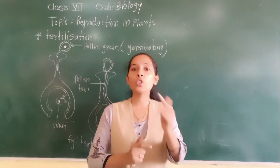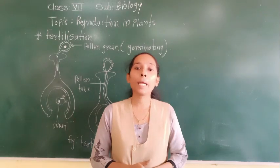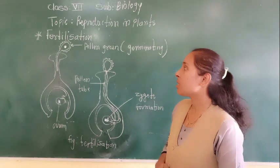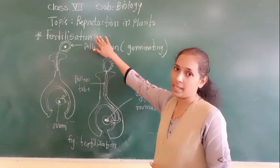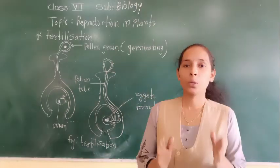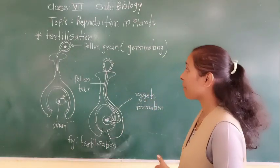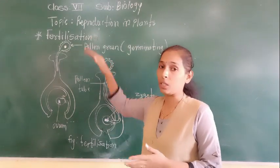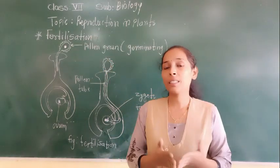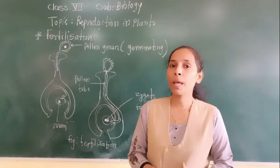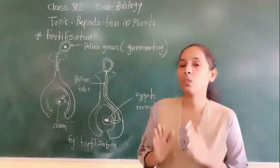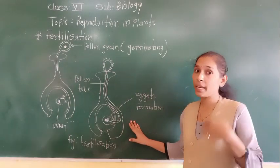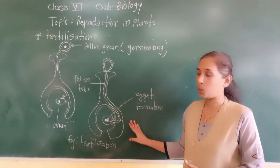So the fusion of the male and the female gamete — that process is called fertilization. Now let's discuss how exactly the pollen grains from the anther reach the ovary and get mixed with the ovules.